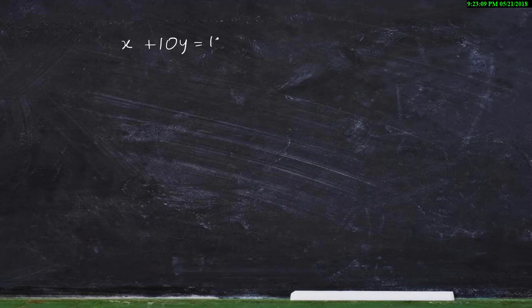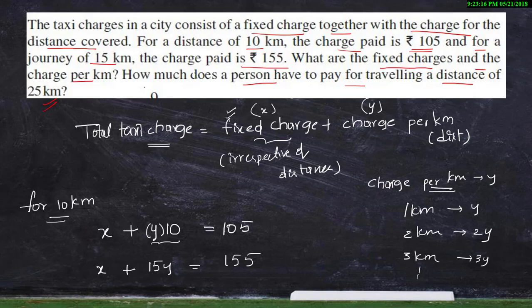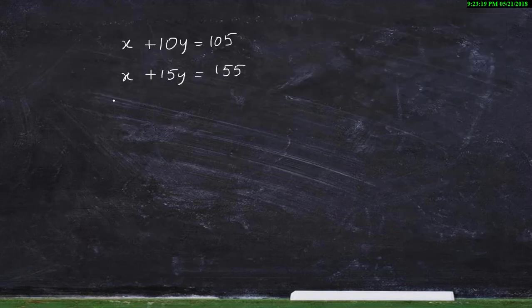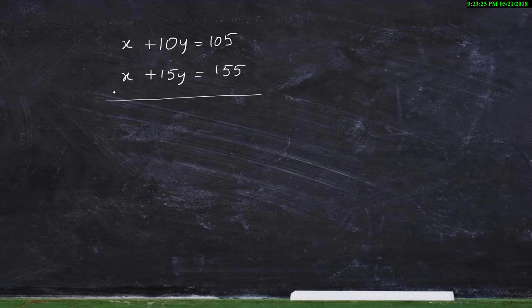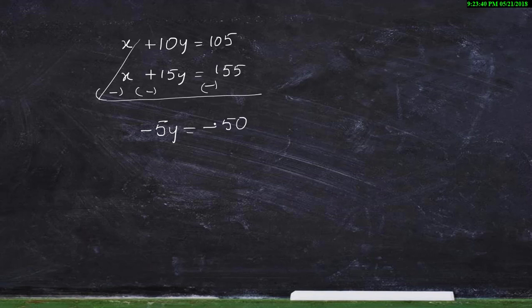Rewriting the equations: x plus 10y equals 105, and x plus 15y equals 155. Now subtracting — since x appears in both equations with the same coefficient, we can subtract. We get 10y minus 15y equals 105 minus 155, which gives minus 5y equals minus 50. So y equals 50 divided by 5, which equals 10.